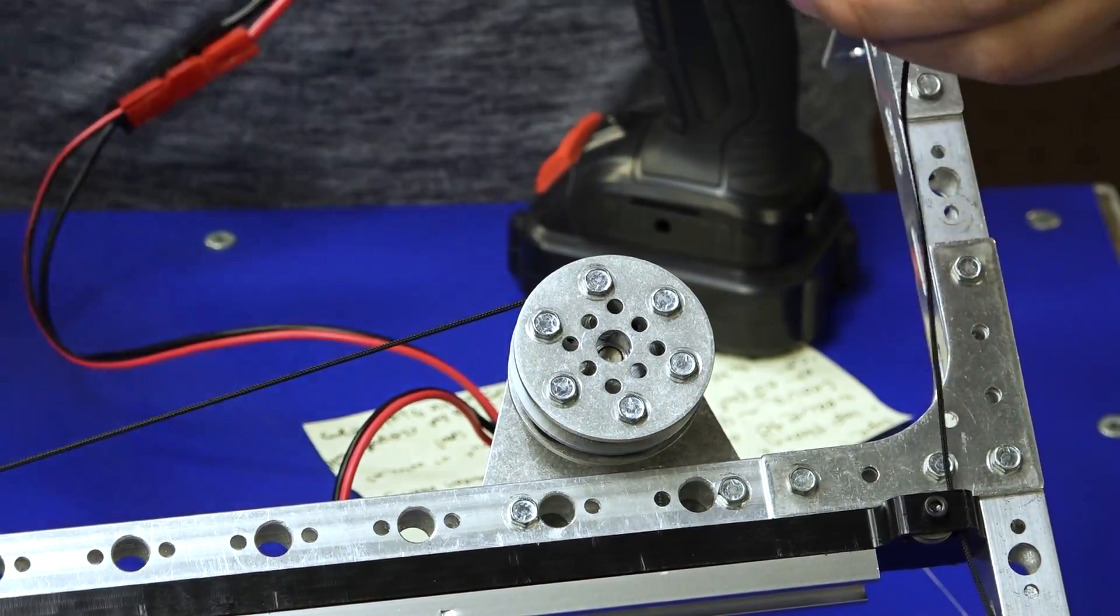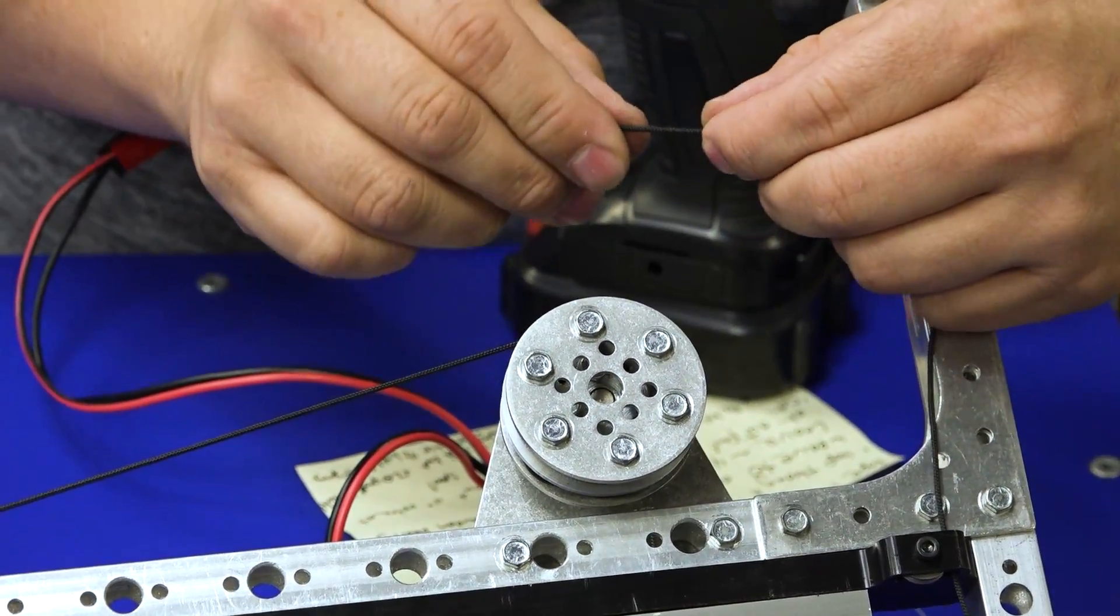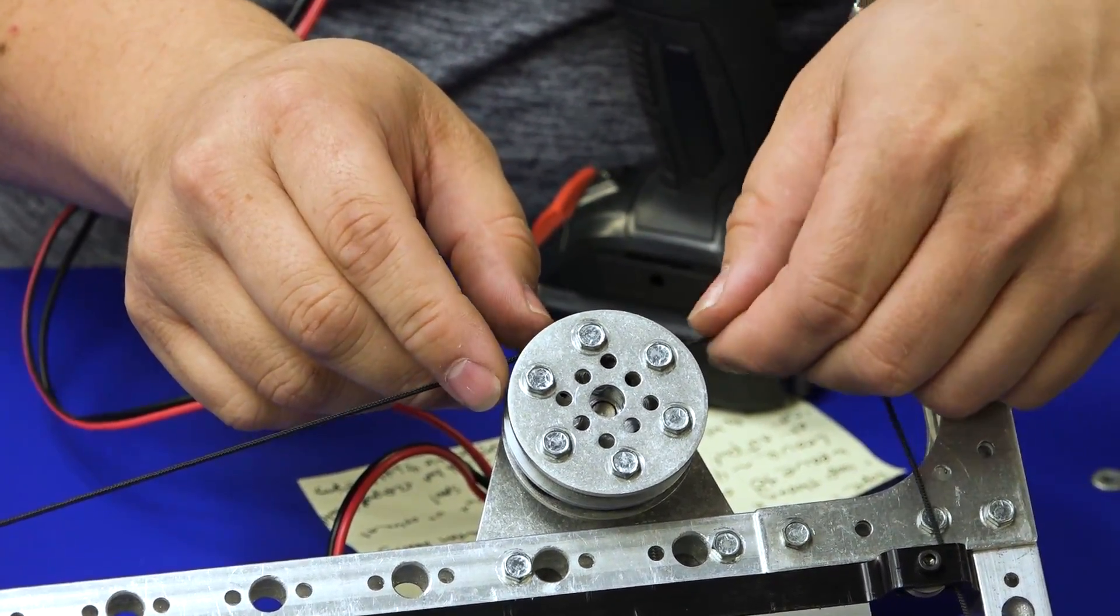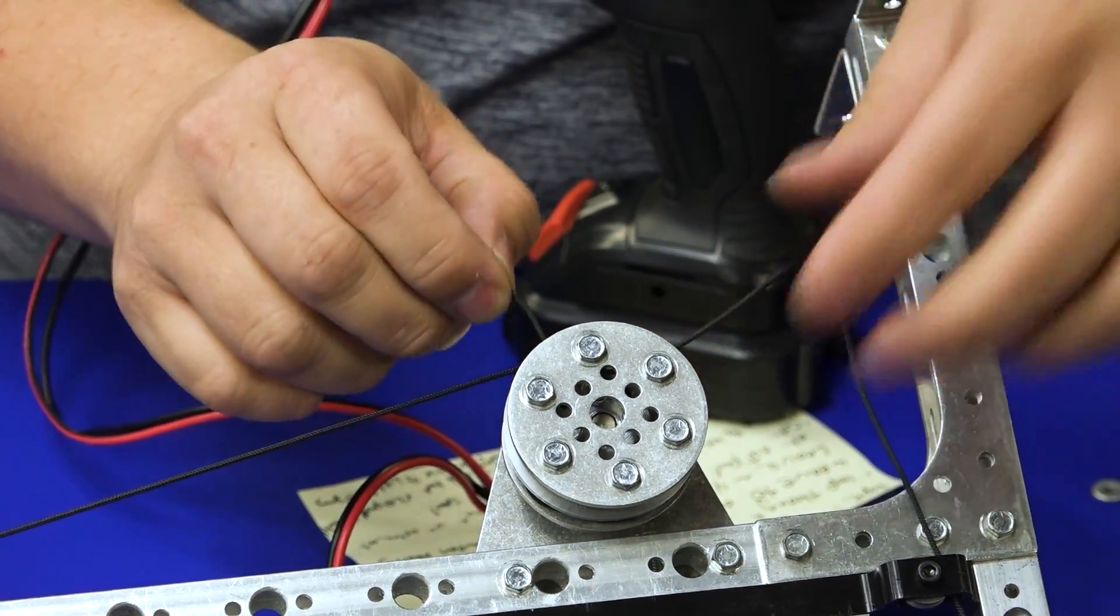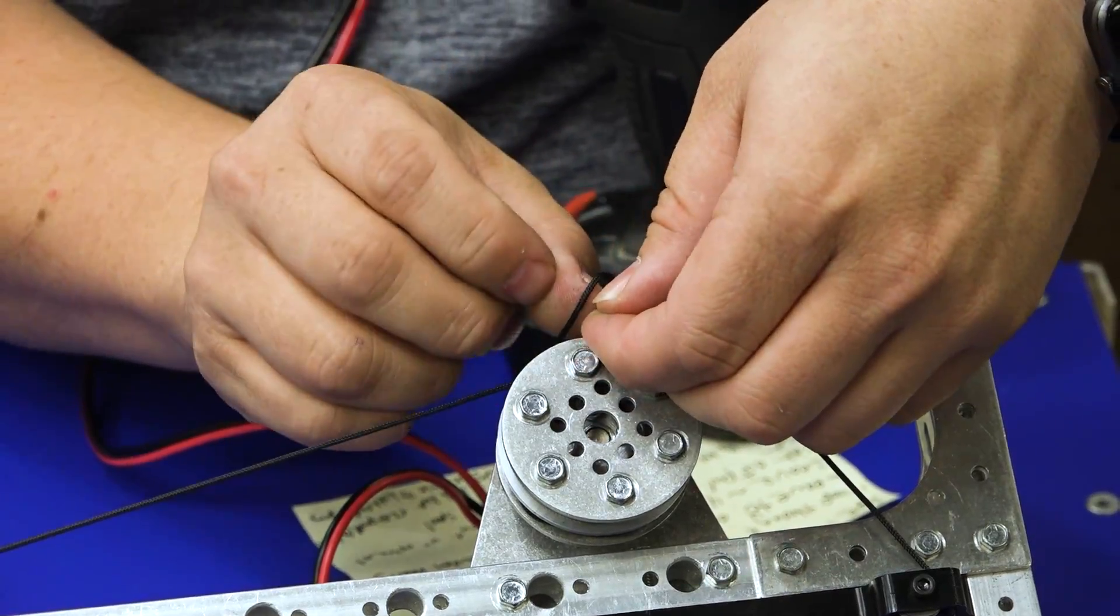Tie our string again. Treat the tip. So on this side we're just going to go around one of the standoffs in the spool just like before. We're going to tie a simple knot. I like to double knot everything.